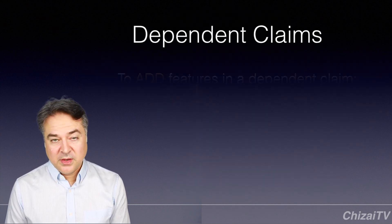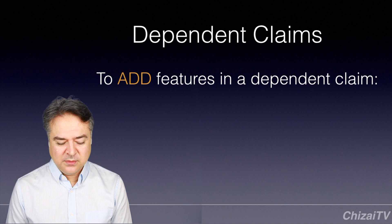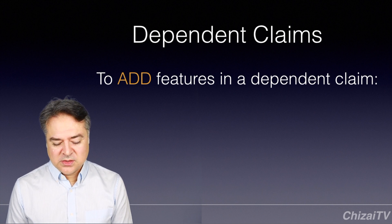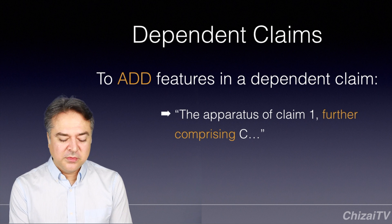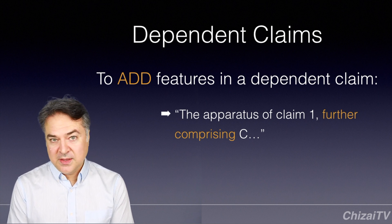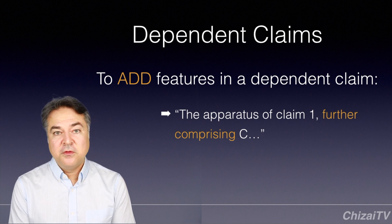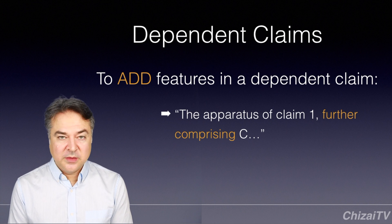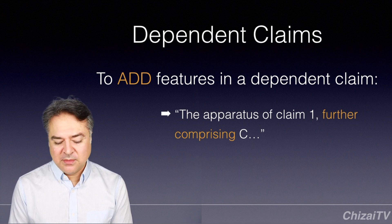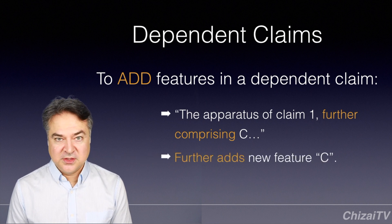We just talked about independent claims. Regarding dependent claims, if you want to add features, we're going to use 'further comprising.' From our claim before — an apparatus comprising A and B — a dependent claim would say: 'the apparatus of claim 1, further comprising C.' So we added the new element C in the dependent claim using further comprising, because it further adds the new feature C.